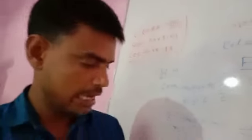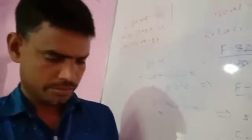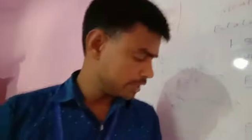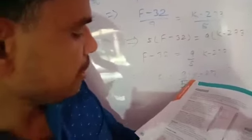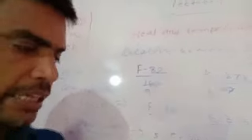In your book, the conversion of scales is given. The formula for F given in your book is: F equals C into 9 by 5, plus 32 — this converts Celsius to Fahrenheit. This is also available in the book. If you have the book, you can use it to verify your work.